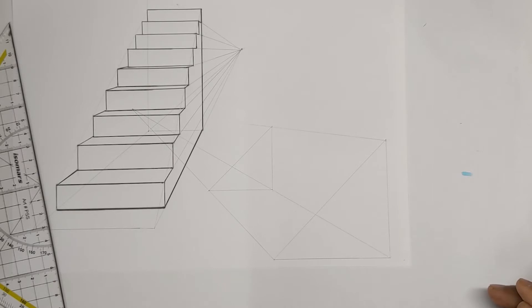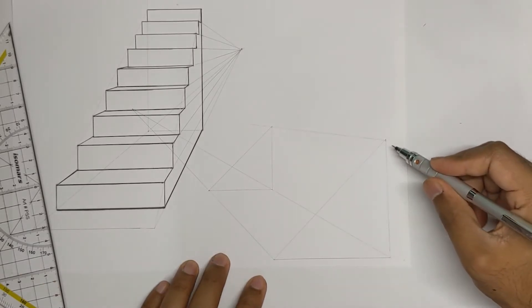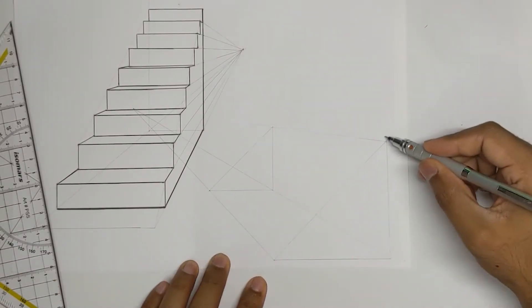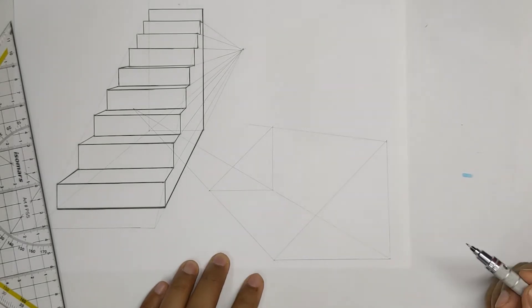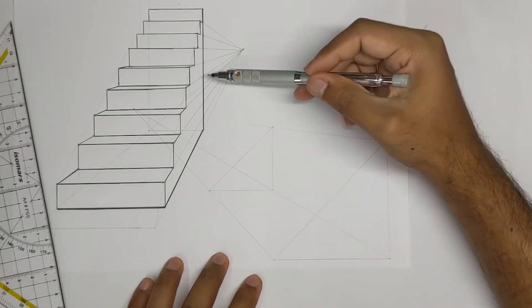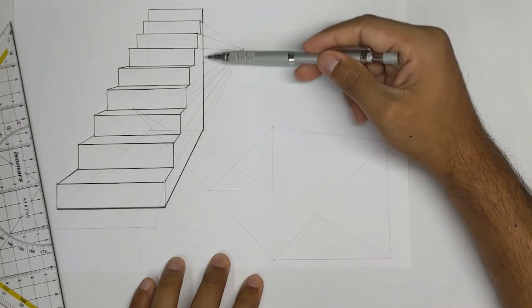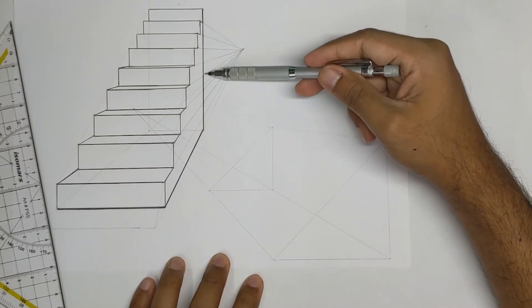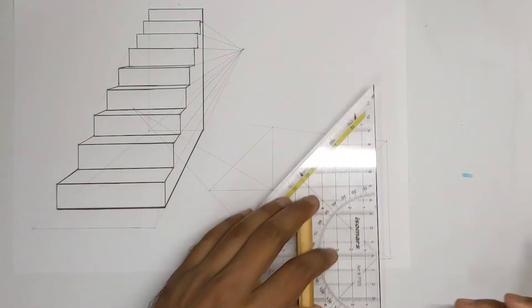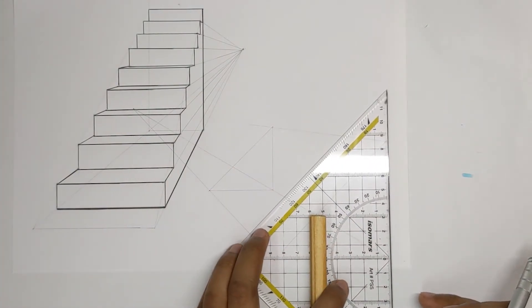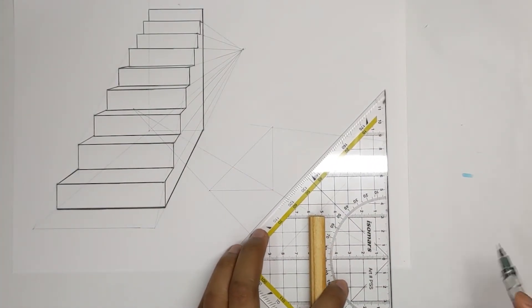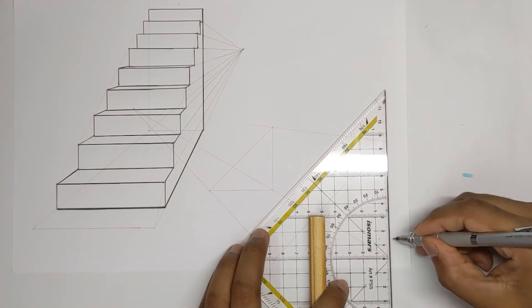So next what we need to do is take this back wall edge and make our divisions. This is again exactly the same as we did for this example. We took this back wall edge and we made equal divisions over there. So again over here I am going to make equal divisions of one centimeter.